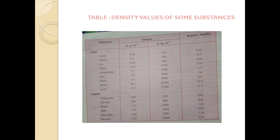Here is a table of density values of some substances — this page is from your course book, table number 25. Density is given in gram per centimeter cube, in kg per meter cube, and relative density is also given. You may compare data; for example, to find relative density of milk, divide density of milk by density of water. Very soon I am going to solve numerical problems based on these. OK children, bye bye.